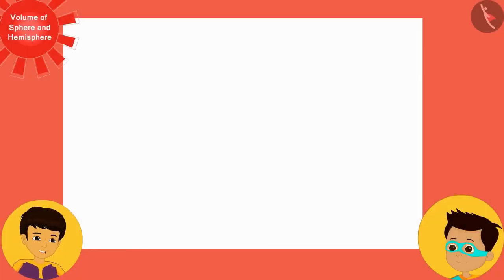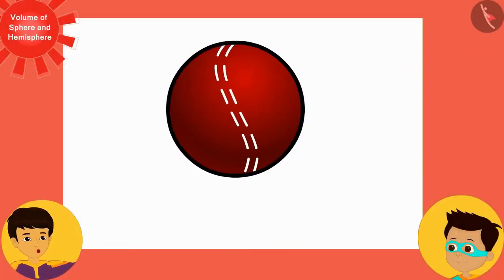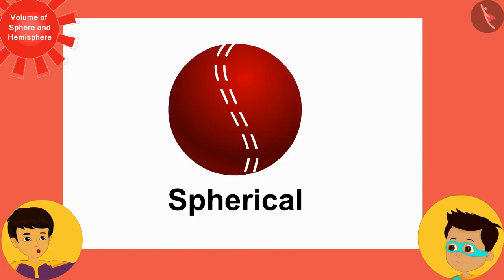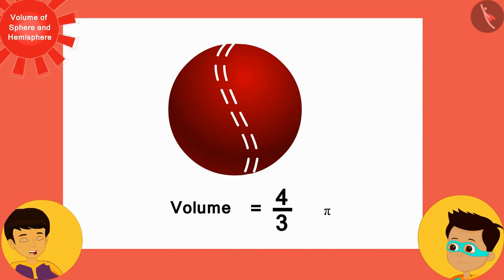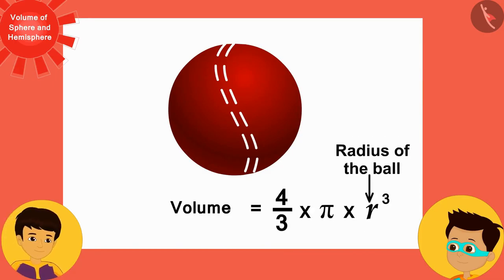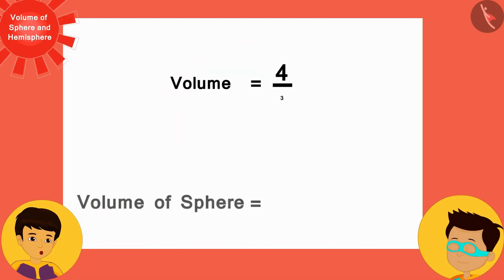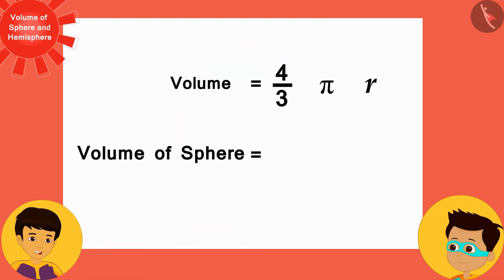Therefore, the volume of the ball is equal to the measure of the water spilled from the vessel. And look, Thomas, the ball is spherical. And you have just seen that its volume is equal to the value of the product of 4 by 3 pi and the cube of the radius of the ball. If we assume that the radius of a spherical ball is R, then we can write the formula of volume of sphere in this way.